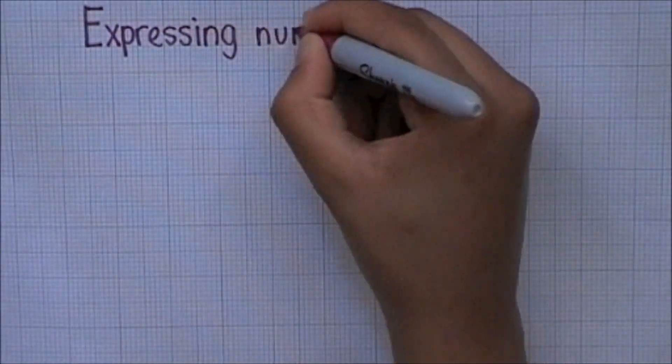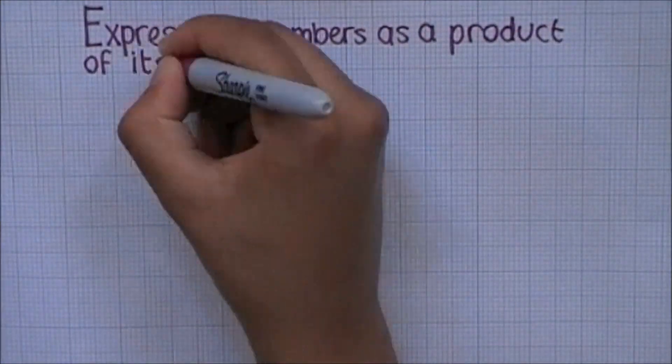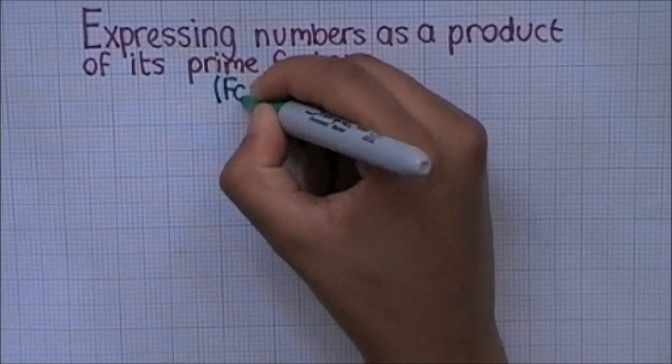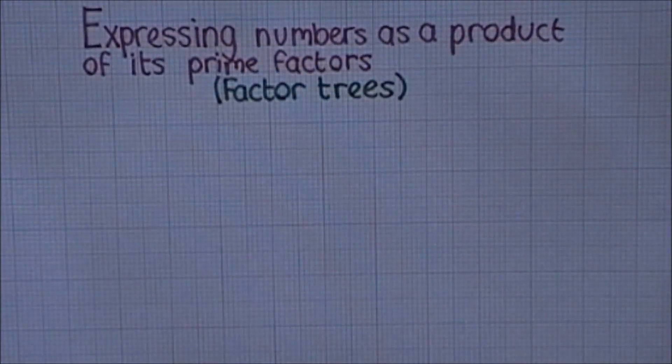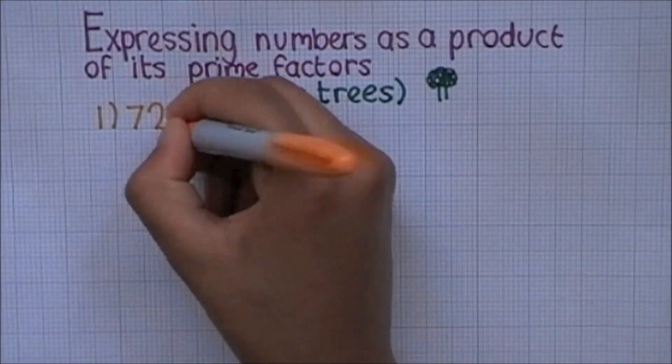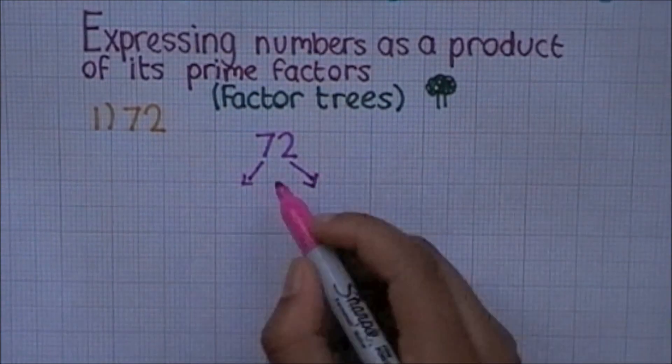Now we've got the definitions out of the way, let's move on to the topic of expressing numbers as a product of its prime factors. Don't be put off. This is just a technical way to say that we need to use factor trees. And because examples make explaining things easier, let's take the number 72.